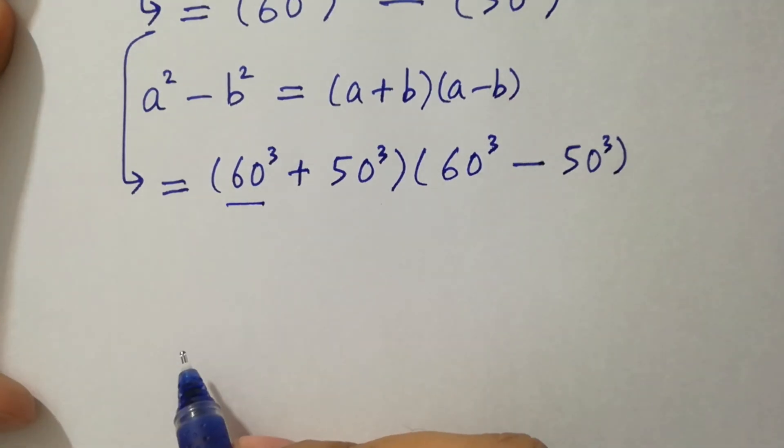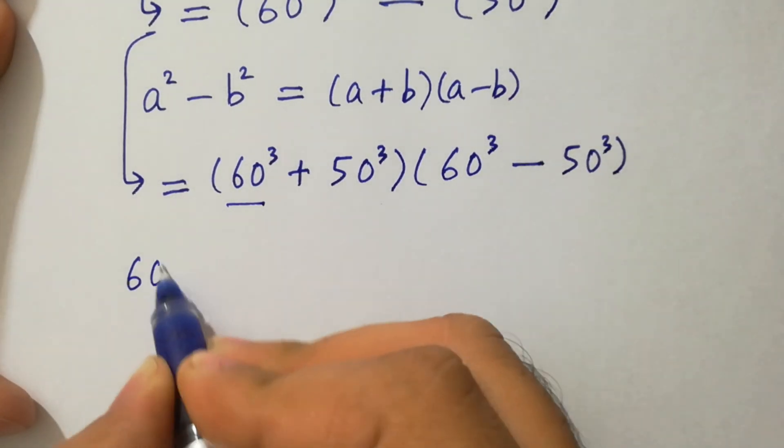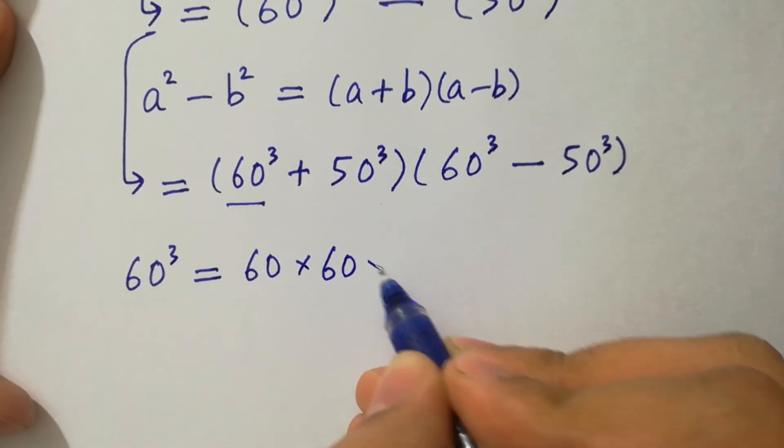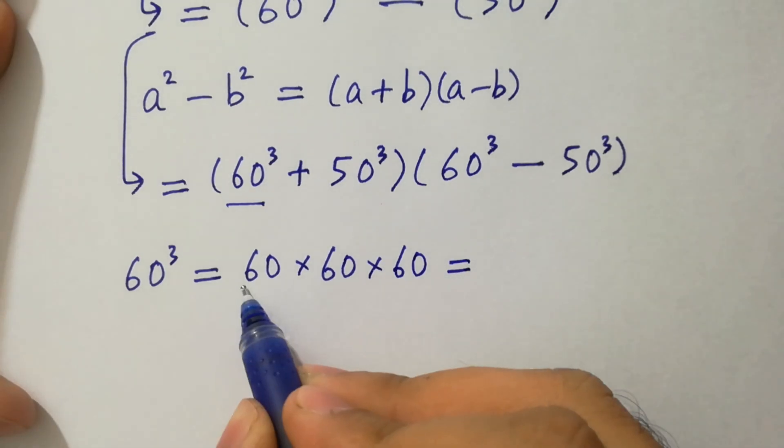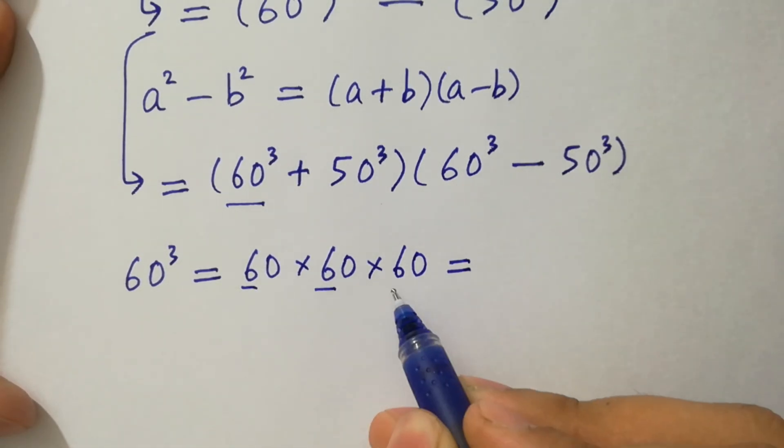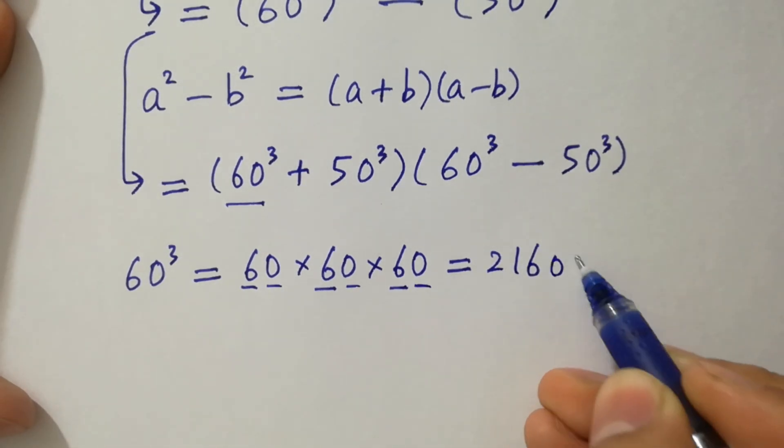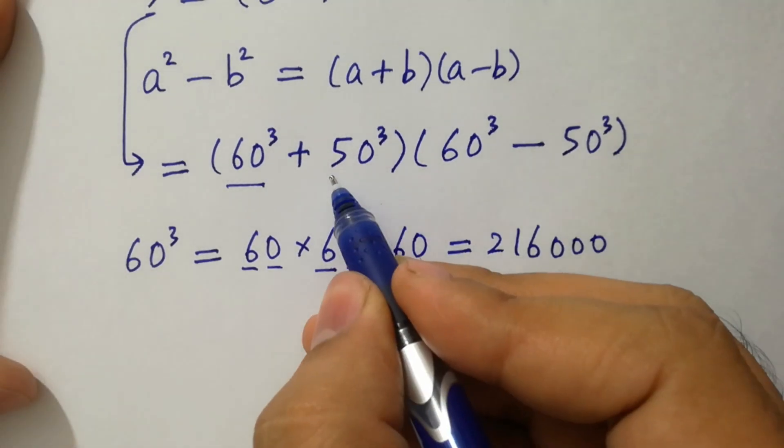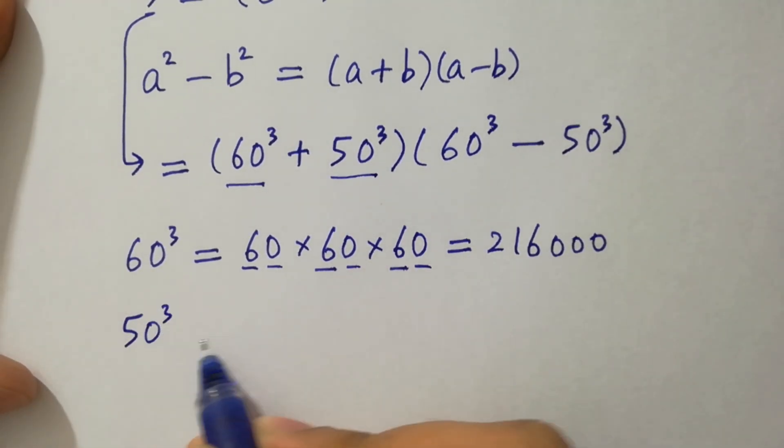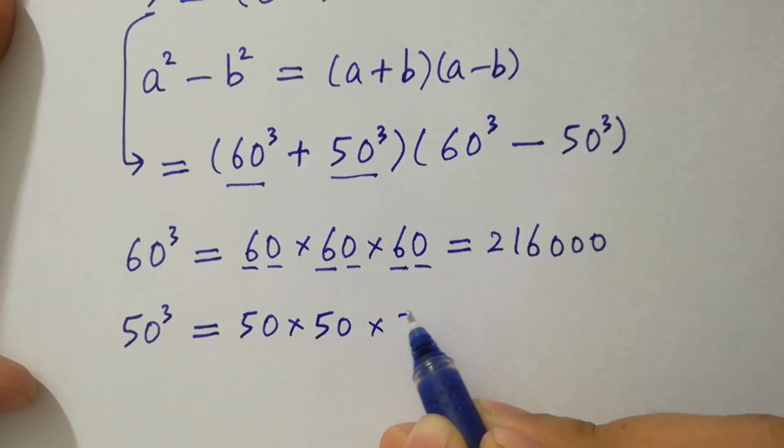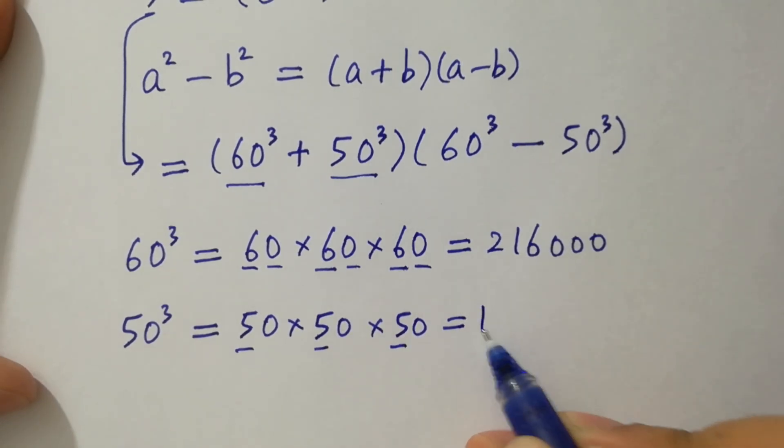Here 60 cube is equal to 60 times 60 times 60. Here 6 times 6 is 36, 36 times 6 is 216, 3 times 0. And now 50 cube is the same as 50 times 50 times 50, 5 times 5 is 25, 25 times 5 is 125, 3 times 0.